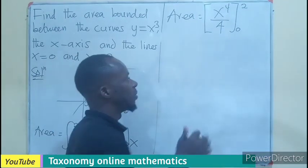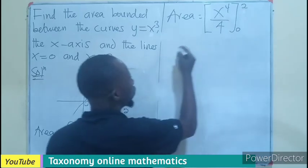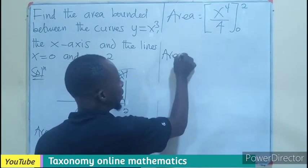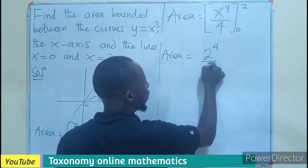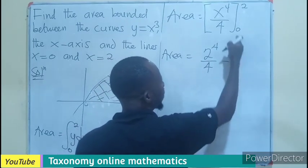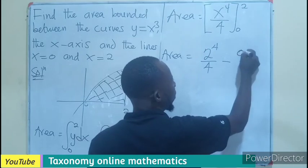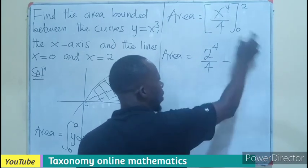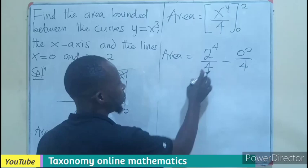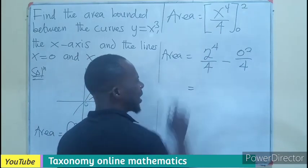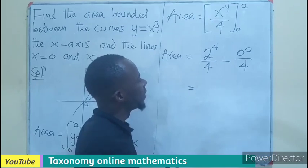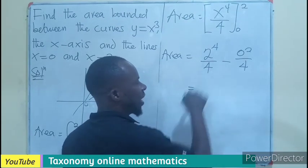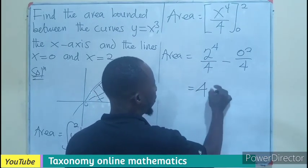From the upper limit, we introduce 2. So area equals 2 to the power 4 over 4, minus the lower limit, 0 to the power 4 over 4. We know this will give us 0. So 2 to the power 4 is 16. 16 divided by 4 equals 4.